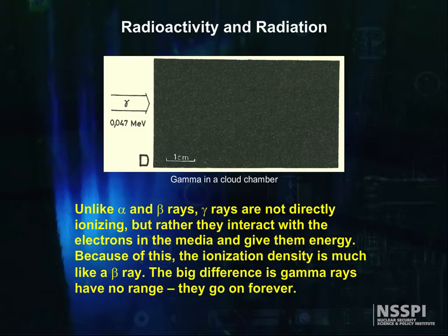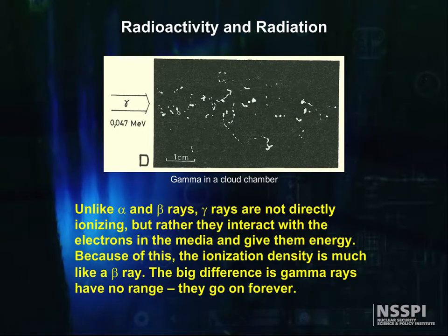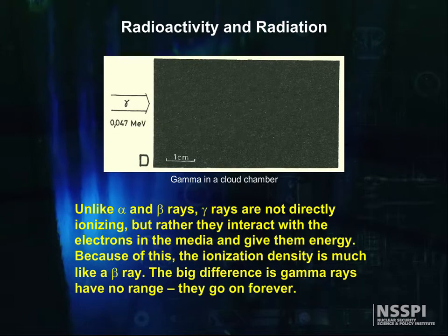Speaking of gammas, unlike alpha and beta rays, gamma rays are not directly ionizing, but rather they interact with the electrons in the media and give them energy. Because of this, the ionization density is much like a beta ray. The big difference is gamma rays have no range. They go on forever.